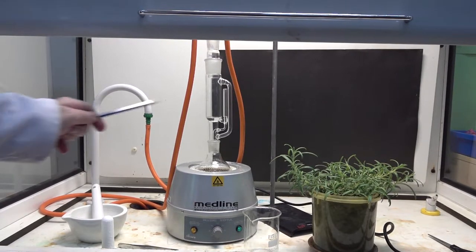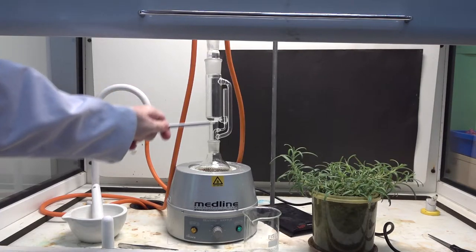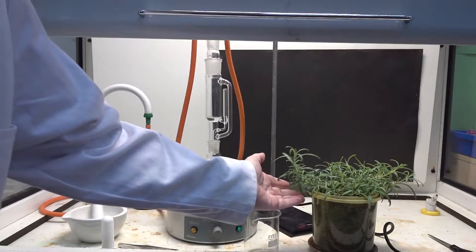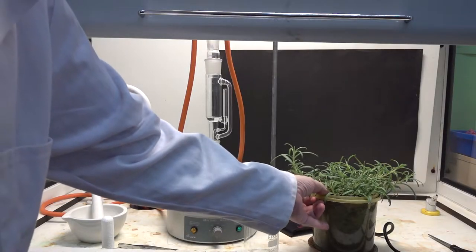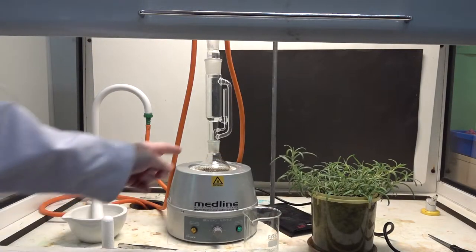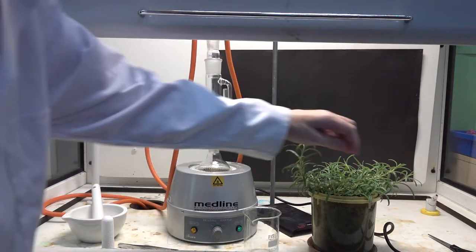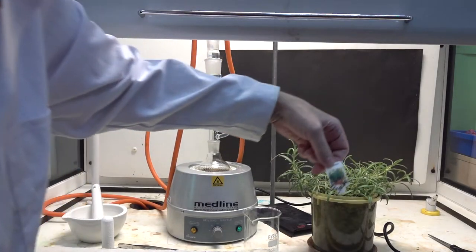In this video we'll be using this Soxhlet extraction apparatus to extract the essential oils from this rosemary plant. Here we'll be using ethanol as the solvent, and hopefully we'll be able to extract some rosemary essence.